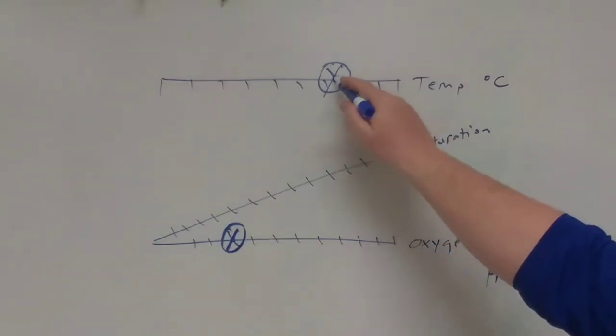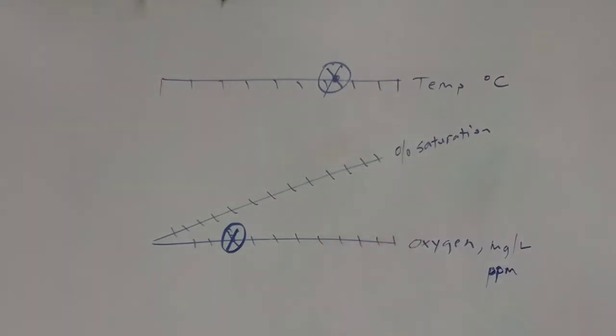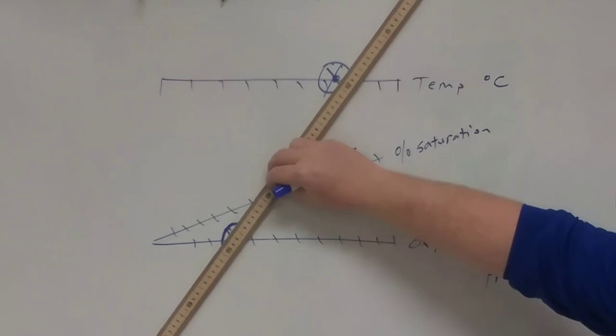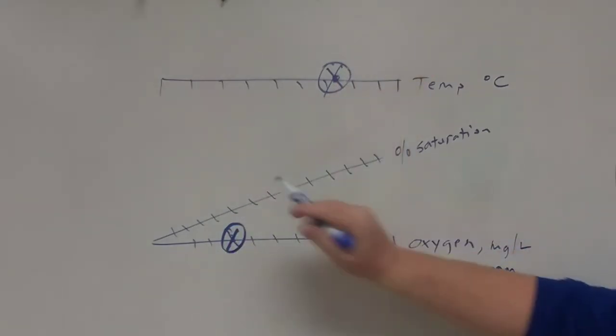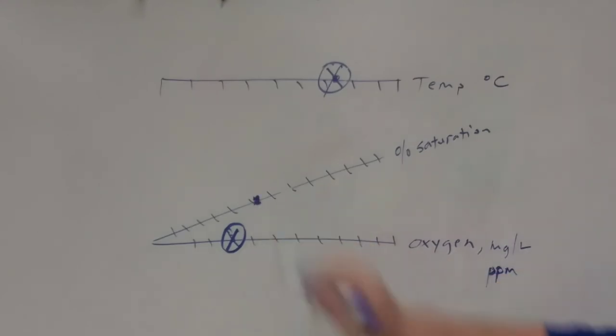What you would do is draw a straight line between here and here, or put a straight edge on it. If you put a straight edge on it, you would look to where your straight edge intersects the saturation, which would be around right in here, and that is your percent saturation. That's how to read a nomograph.